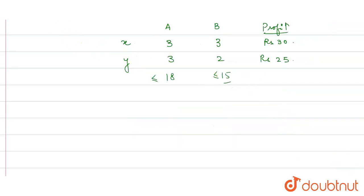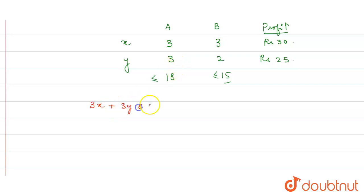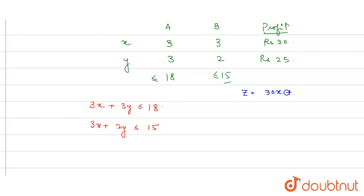Here clearly, forming our equations: for machine A we have 3x plus 3y less than or equal to 18, and for machine B we have 3x plus 2y less than or equal to 15. The maximum profit function is Z equals 30x plus 25y.